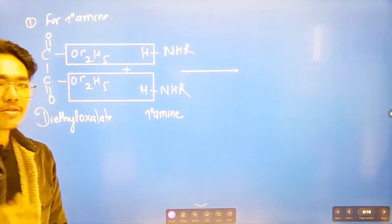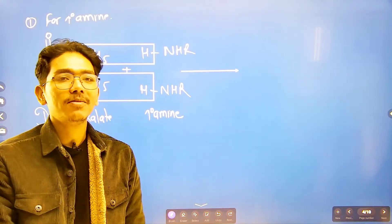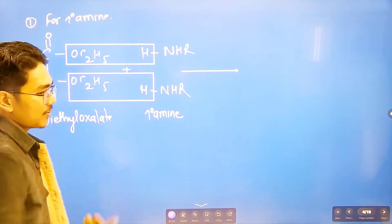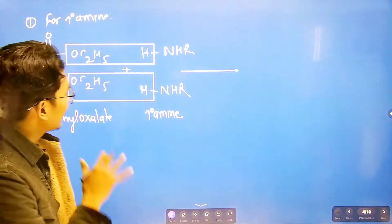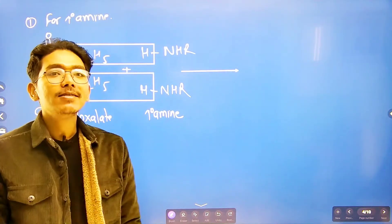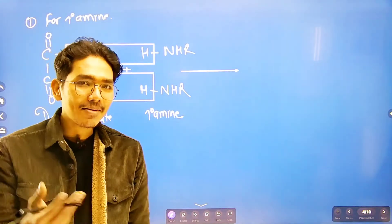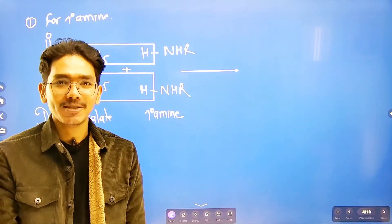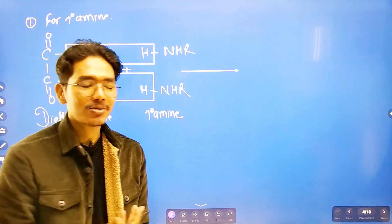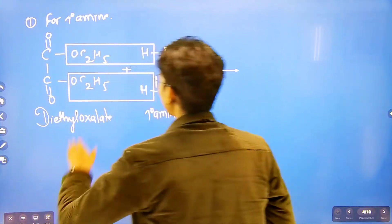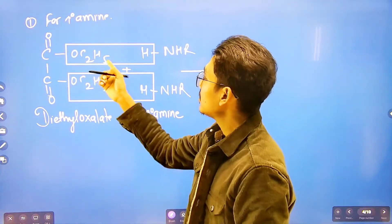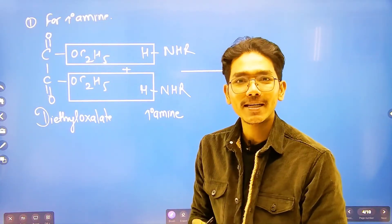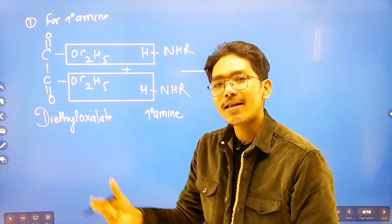This solution is going to react with the primary amine. You have to react on three different amines. The first thing is to remove C2H5OH — we need to remove the alcohol. The C2H5OH represents two molecules of alcohol being released.